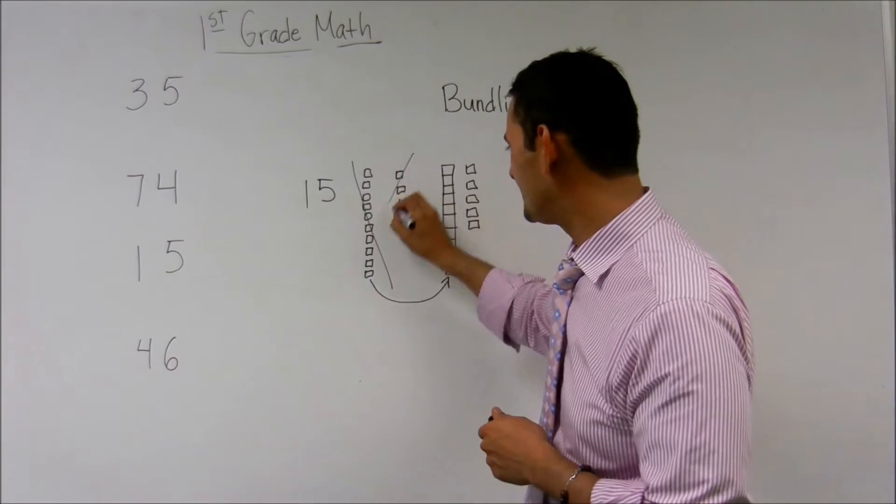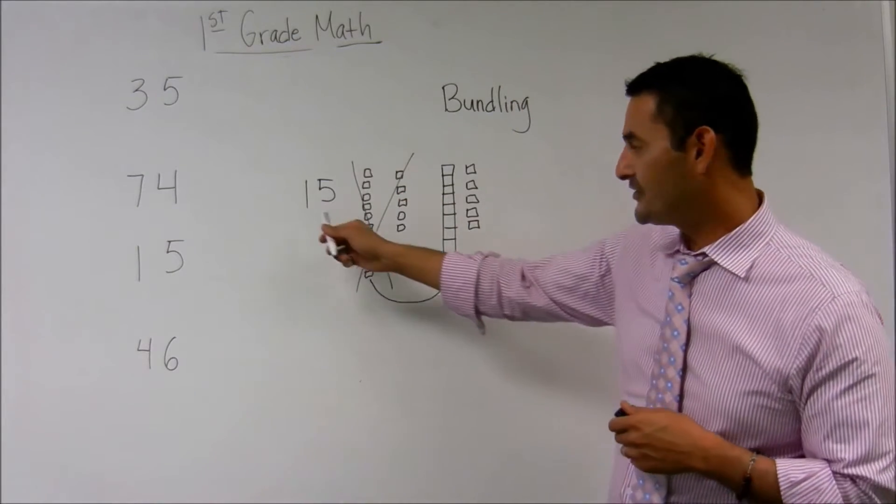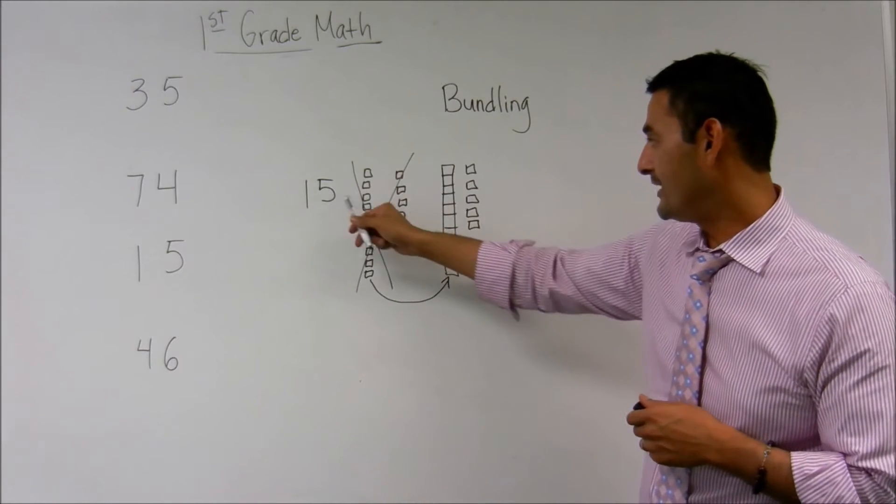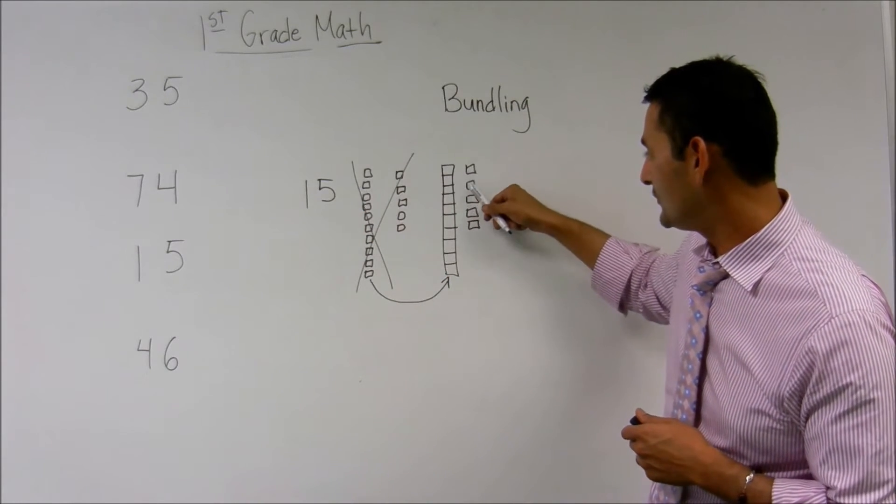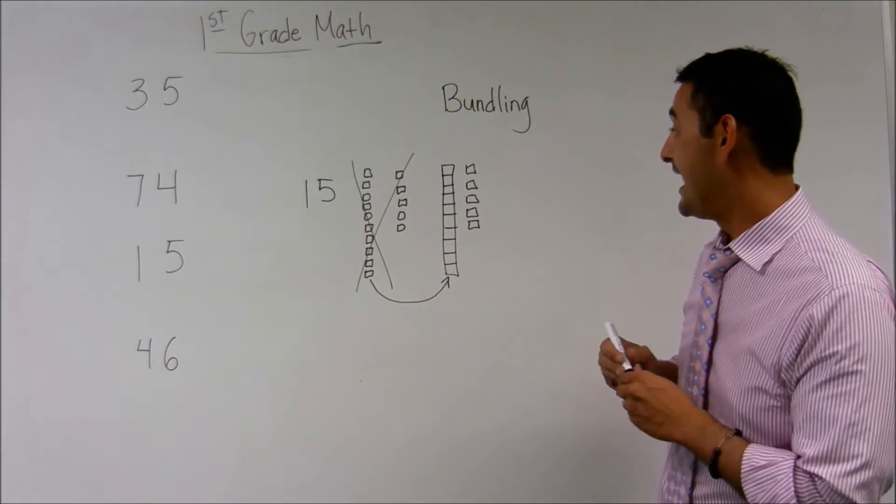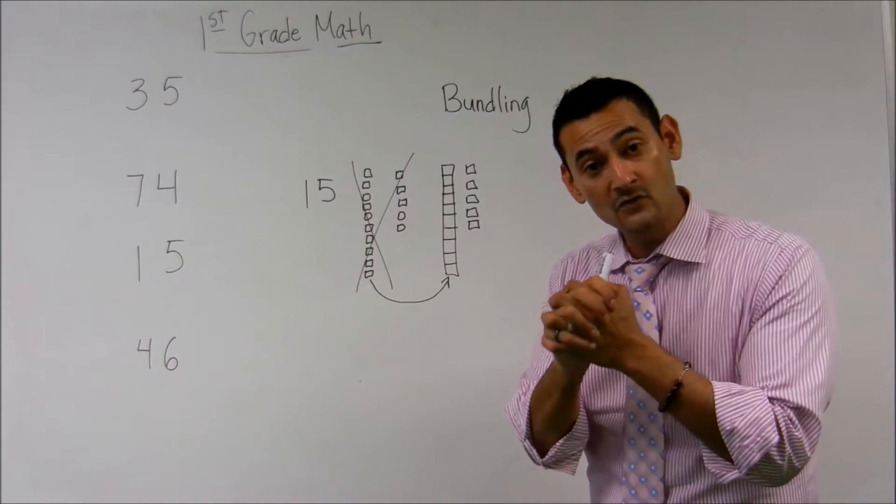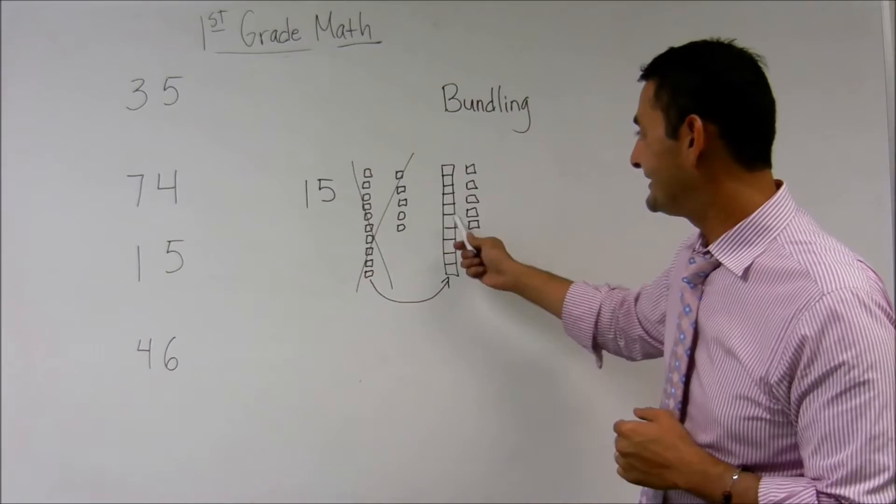So let's not use that example. So when you're looking at fifteen, we've got one ten, and we've got five ones. One, two, three, four, five. And this piece right here, we've bundled up all of those ones together to make one ten.